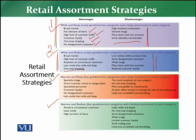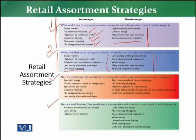The disadvantages of wide and shallow strategy include low variety within a product line. Some disappointed customers, because if someone doesn't find the product they are looking for, it results in disappointment. It gives a weak image of the retailer, and many items have low turnover. If you are not carrying a large assortment in every category, many products will sell low and stay for a longer period. The disappointment of customers will ultimately result in reduced customer loyalty.